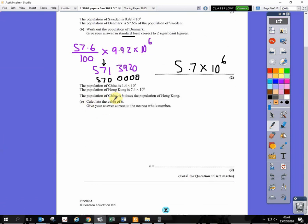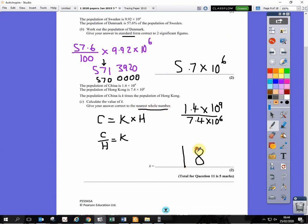The next sentence says China is K times the population of Hong Kong. China is equal to K times the population of Hong Kong. Work out the value of K. So a bit of rearranging will tell you that C over H is equal to K. So you take China's population and divide it by Hong Kong's population, you end up with the value of K. Like this: 1.4 times 10 to the power of 9 over 7.4 times 10 to the power of 6. Type that into the calculator, and then round to the nearest whole number. We end up with 189.